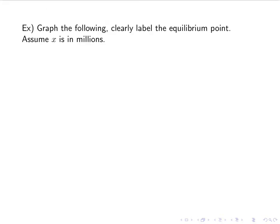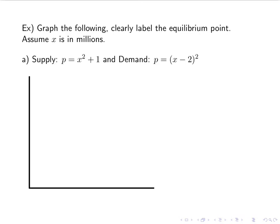So graph the following — clearly label the equilibrium point — and again we're going to assume x is in millions. Supply is p equals x squared plus 1, demand is p equals x minus 2 squared. We'll start by finding the equilibrium point by setting our two equations equal: x squared plus 1 equals x minus 2 squared. FOILing out x minus 2 squared gives x squared minus 4x plus 4. Please double-check that.